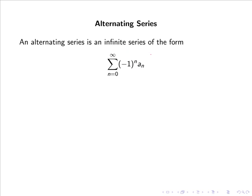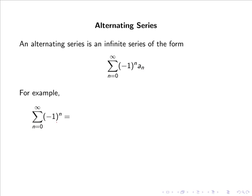An alternating series is an infinite series of the form the sum from 0 to infinity of (-1)^n times a_n. For example, consider the sum from 0 to infinity of (-1)^n, which gives us (-1)^0 + (-1)^1 + (-1)^2 + (-1)^3 + ... that is, 1 - 1 + 1 - 1 and so forth.